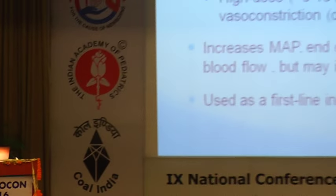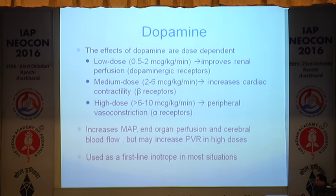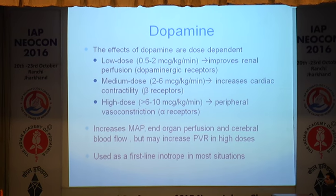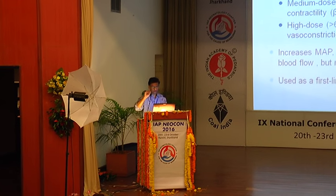Dopamine is a dose-dependent drug. At low dose, below 2 micrograms, it improves renal perfusion. Between 2 to 6, it causes some cardiac inotropy. Beyond 6, it has extensive peripheral vasoconstrictor effect. By and large, dopamine is a vasopressor — it increases mean arterial pressure. But as has been mentioned, it can also cause an increase in pulmonary vascular resistance. However, despite its various disadvantages, it is still widely used as a first-line inotrope in most clinical situations.